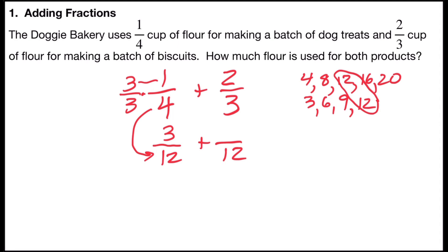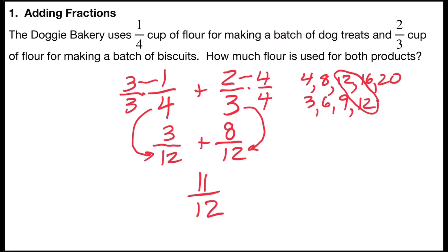I'm going to do the same thing with two-thirds. Three times what number gives me 12? That's 4, so I multiply by the form of 1: 4 over 4. Two times 4 is 8. Now, since I have a common denominator, all I have to do is add the numerators. Three-twelfths plus 8-twelfths will give me 11-twelfths. Add the numerators, keep the same denominator. 11-twelfths can't be reduced, so the amount of flour used for both products will be 11-twelfths cups.